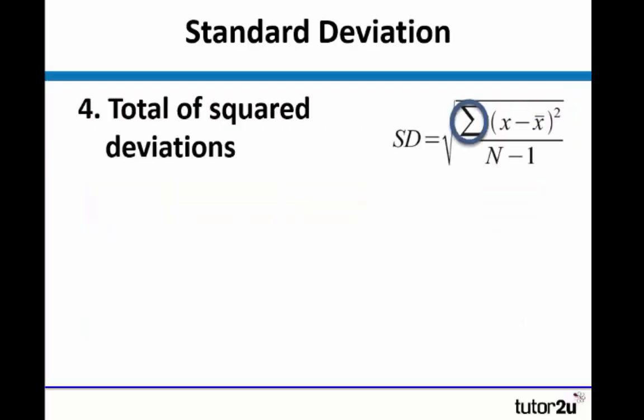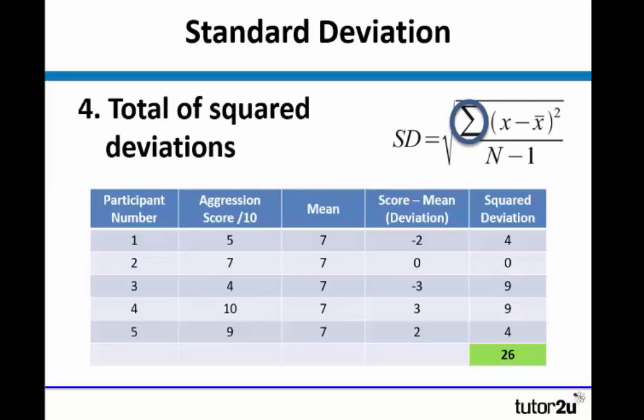Then what we have to do is find the total of the squared deviations, which is represented by sigma in the formula. So we add them all up, add up all the squared deviations, and that gives us the answer of 26. So 4 add 0, add 9, add 9, add 4 is 26.